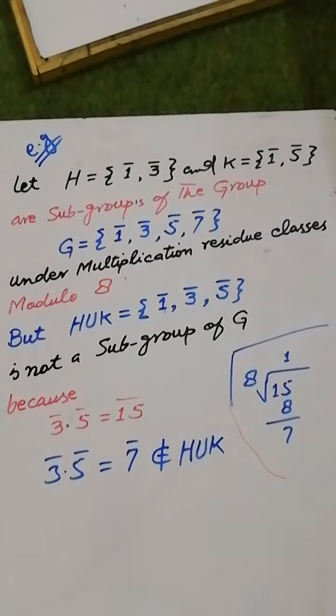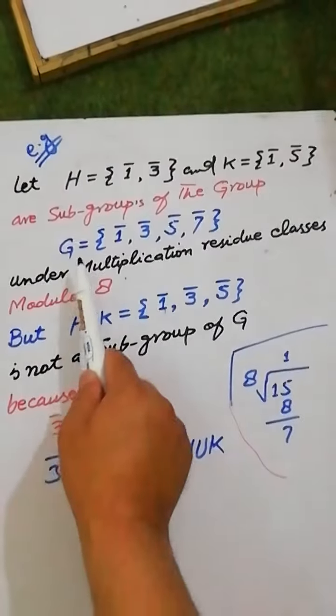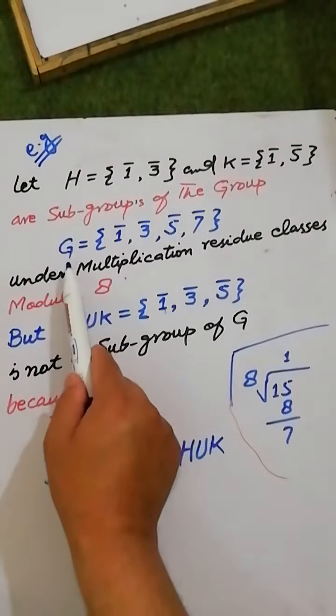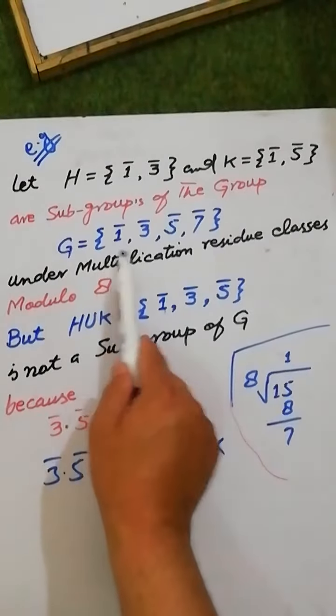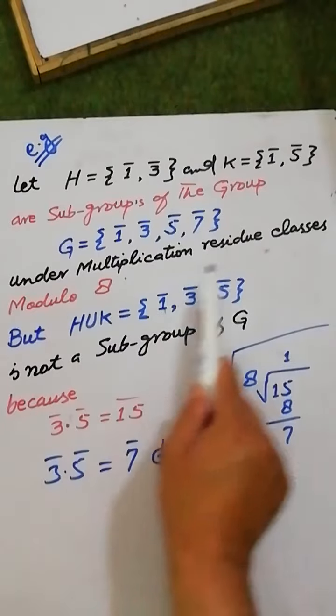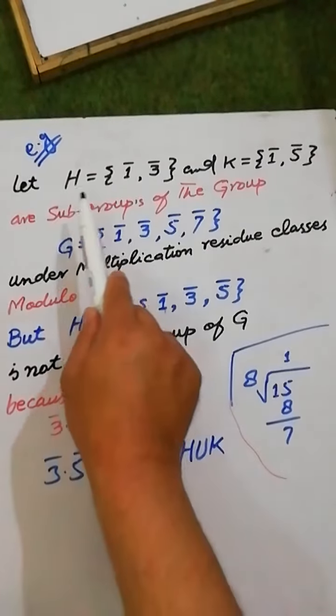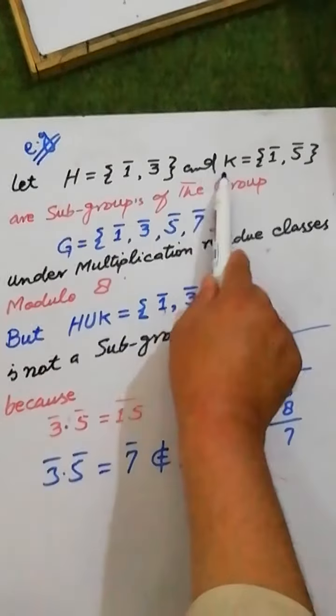Let H and K be subgroups of the group G, where G = {1, 3, 5, 7}. This set is a group under multiplication residue classes modulo 8. But the union of H